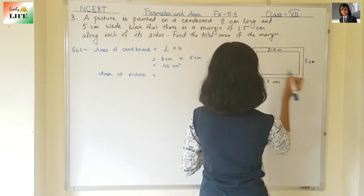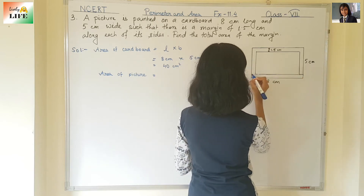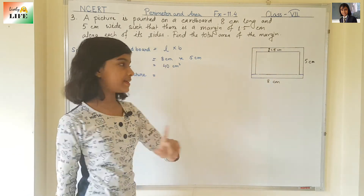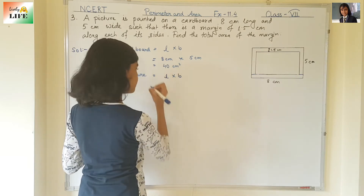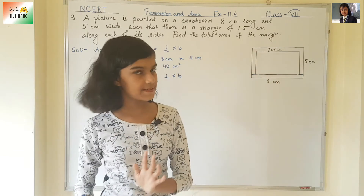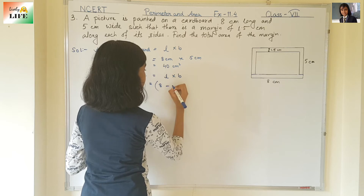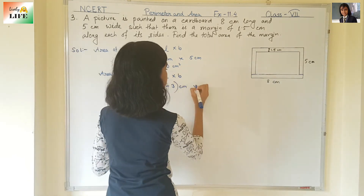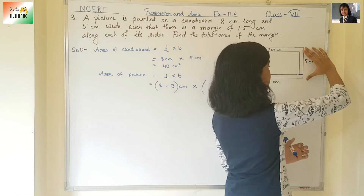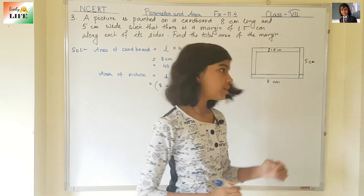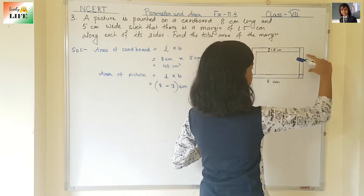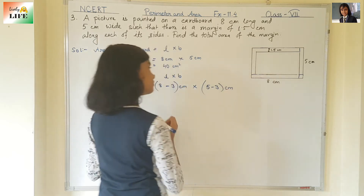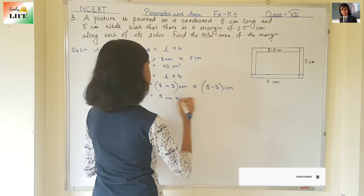So we write L into B. The length will be 8 minus (1.5 + 1.5) = 8 minus 3 = 5 cm. For the breadth, the cardboard is 5 cm wide, and there is 1.5 cm margin on each side, so 5 minus (1.5 + 1.5) = 5 minus 3 = 2 cm. So the length of the picture is 5 cm and the breadth is 2 cm.